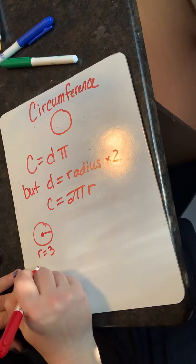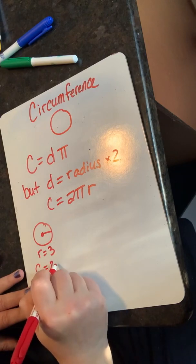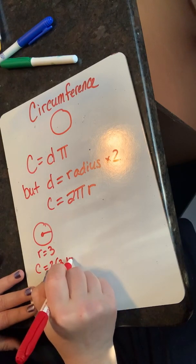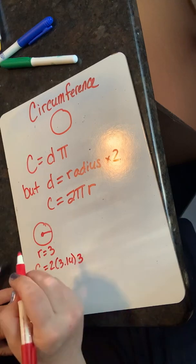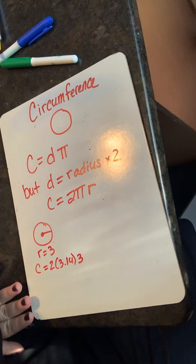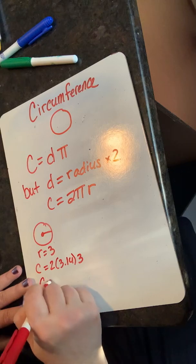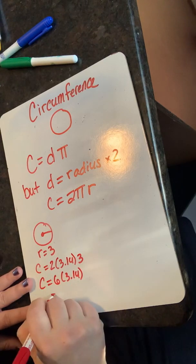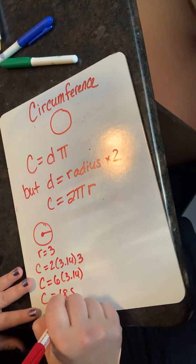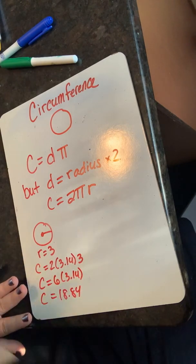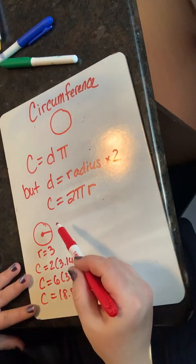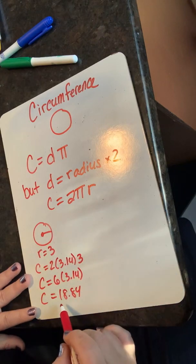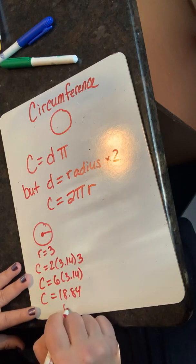I rewrite the equation plugging in my values. Reescribo la ecuación conectando mis valores. I multiply and solve my equation. Multiplico y resuelvo mi ecuación. The circumference of this circle with a radius of three is 18.84 units.